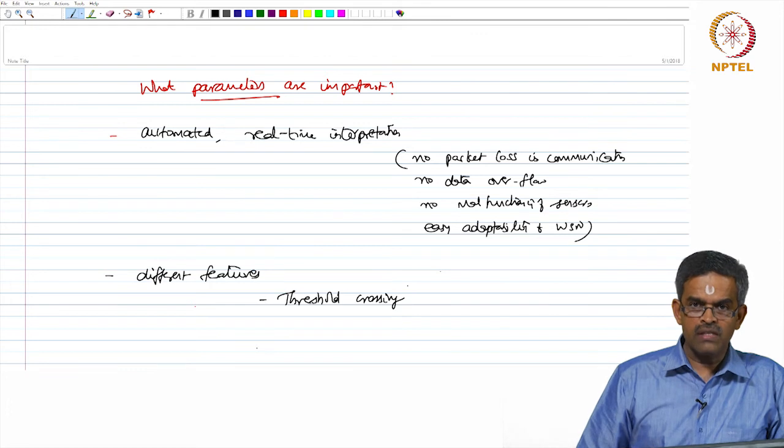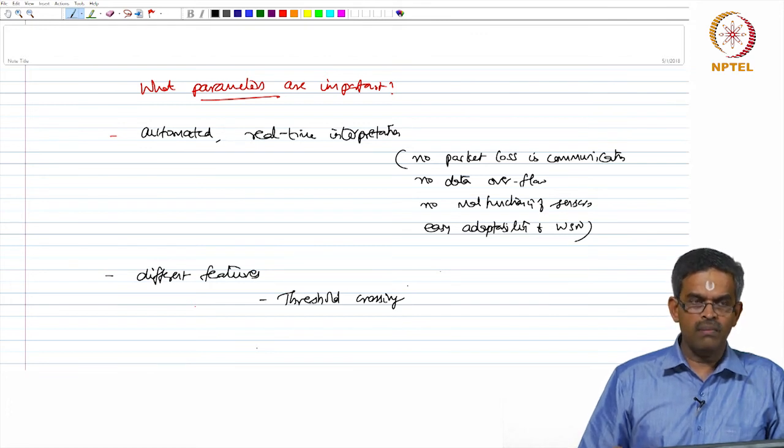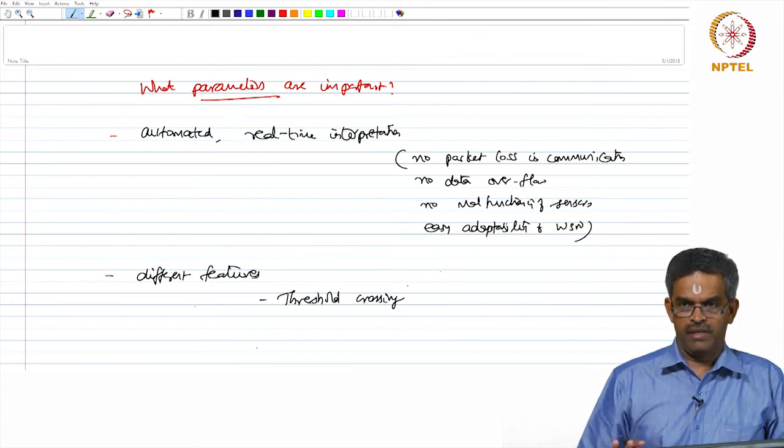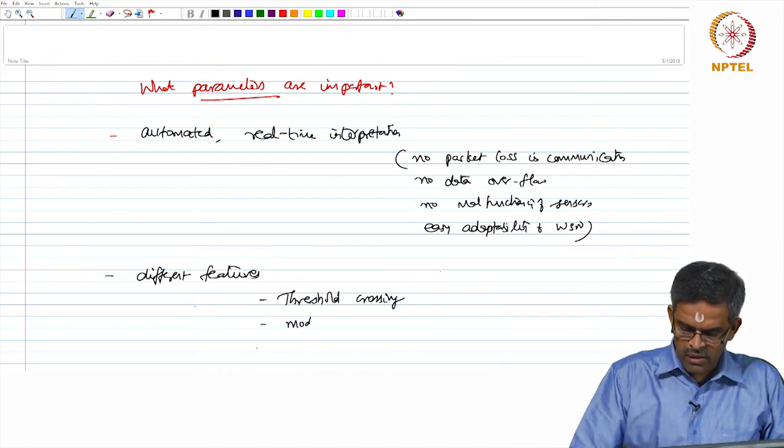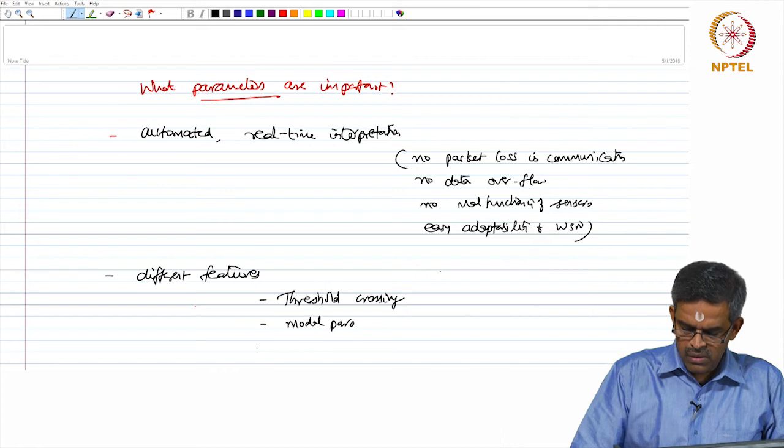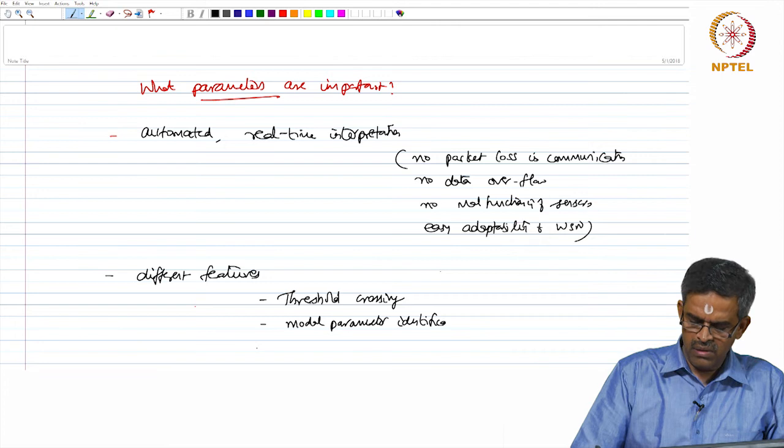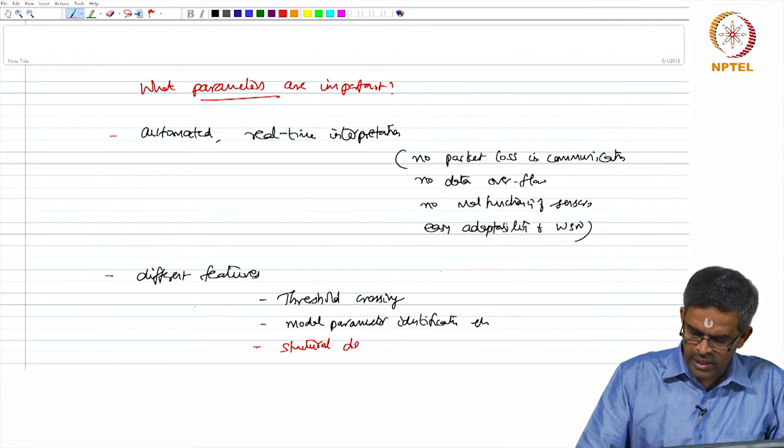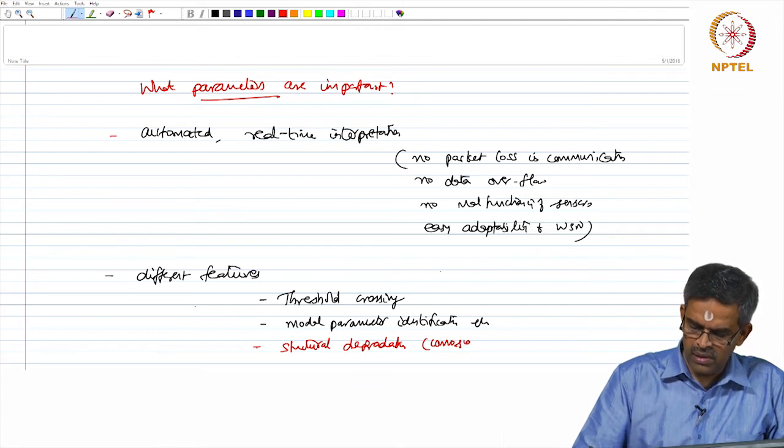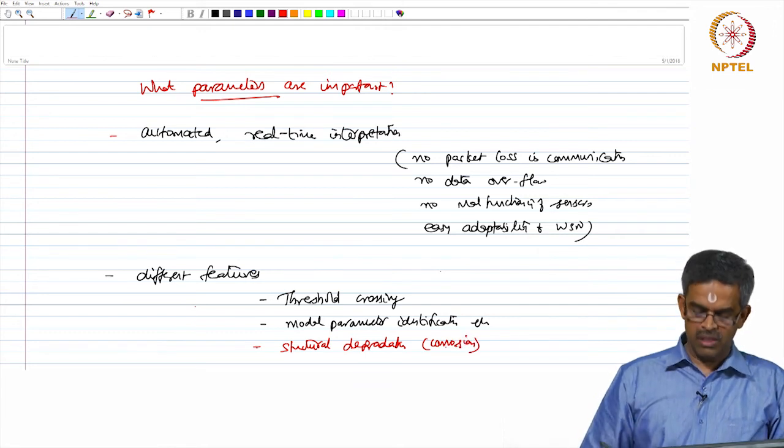And easy adaptability of sensor networking. So, that they can do real time interpretation automatically using different features. Because we just now said mass and stiffness characteristics keep on changing. So, vibration based monitoring is circumscribed with these two values. So, measuring them continuously we are not going to do anything important as far as this monitor is concerned. So, looking for different features namely threshold crossing. Only when these changes cross a threshold number there should be a communication. Change in modal parameters. So, modal parameter identification should also be focused on structural degradation if any because corrosion is a severe issue as far as these platforms are concerned.